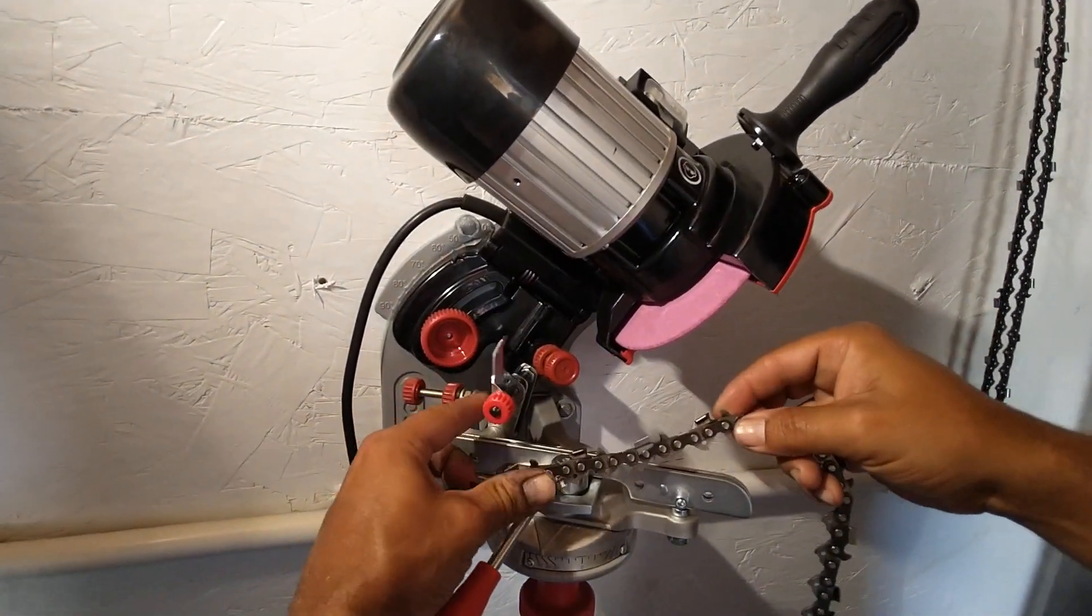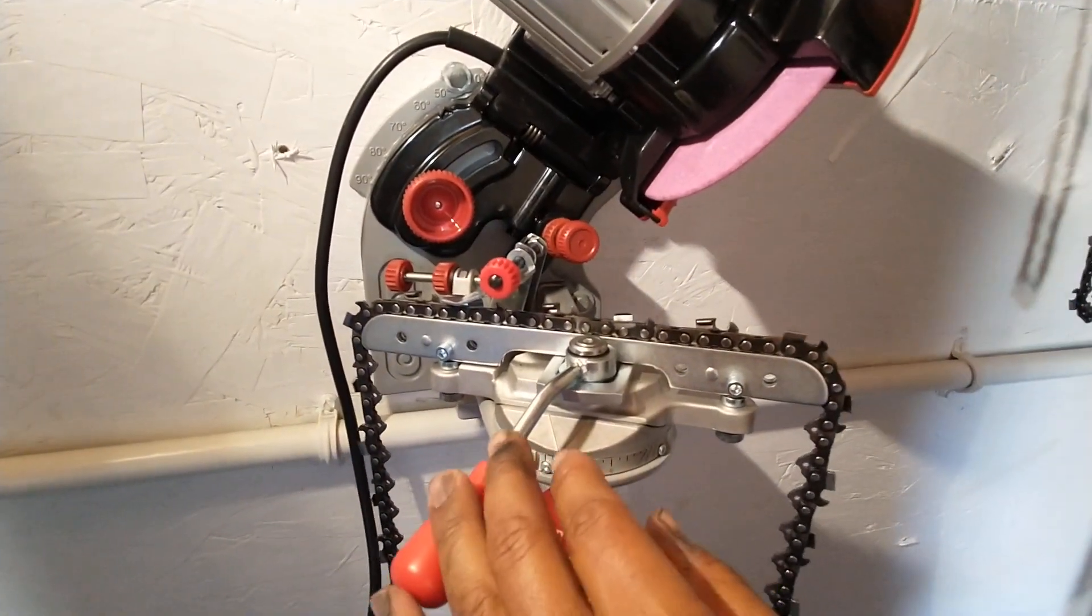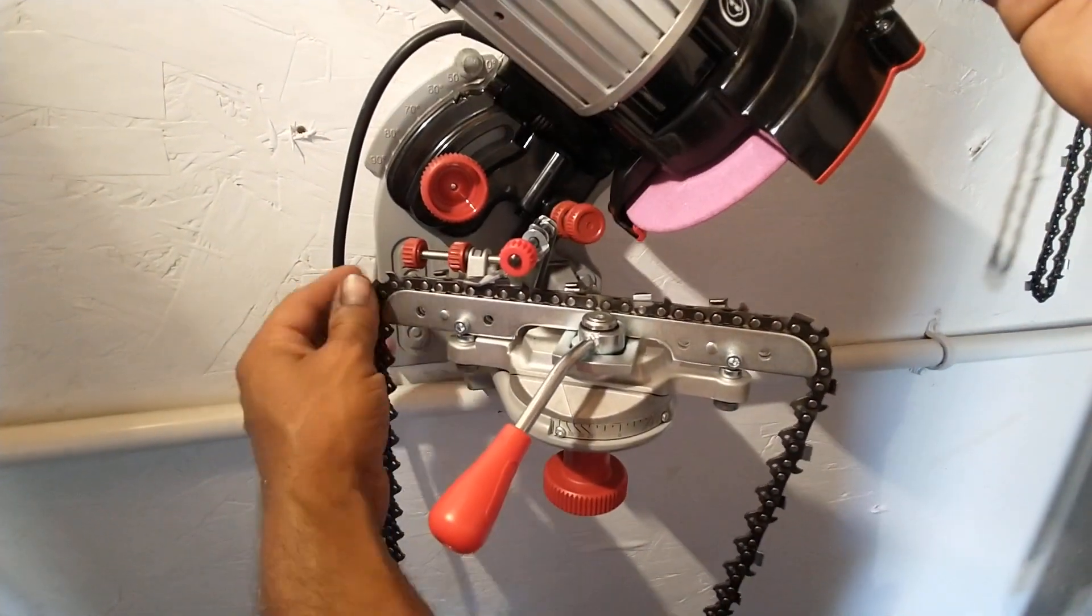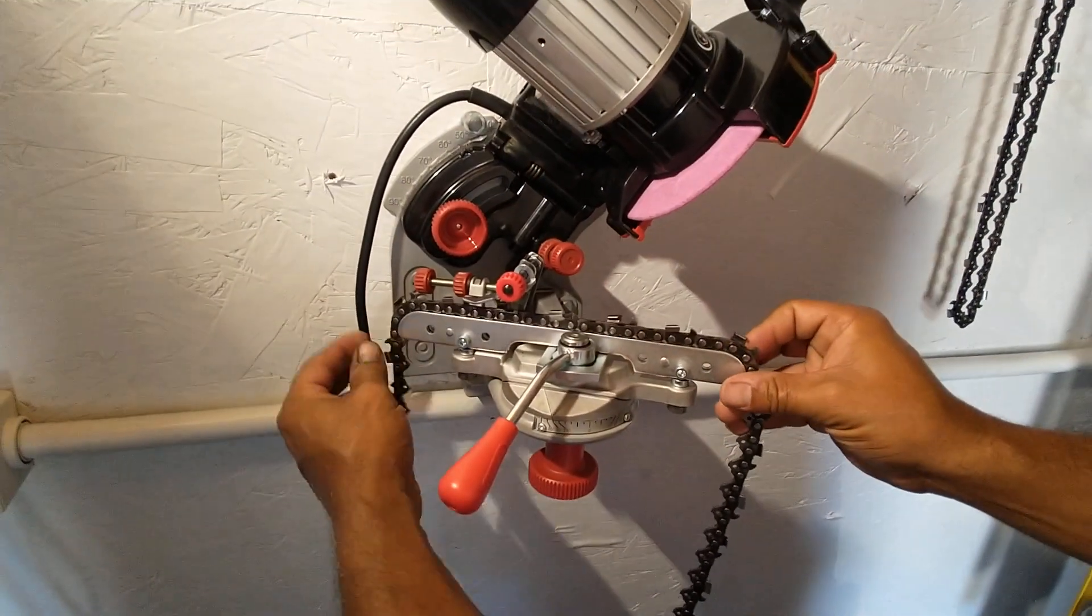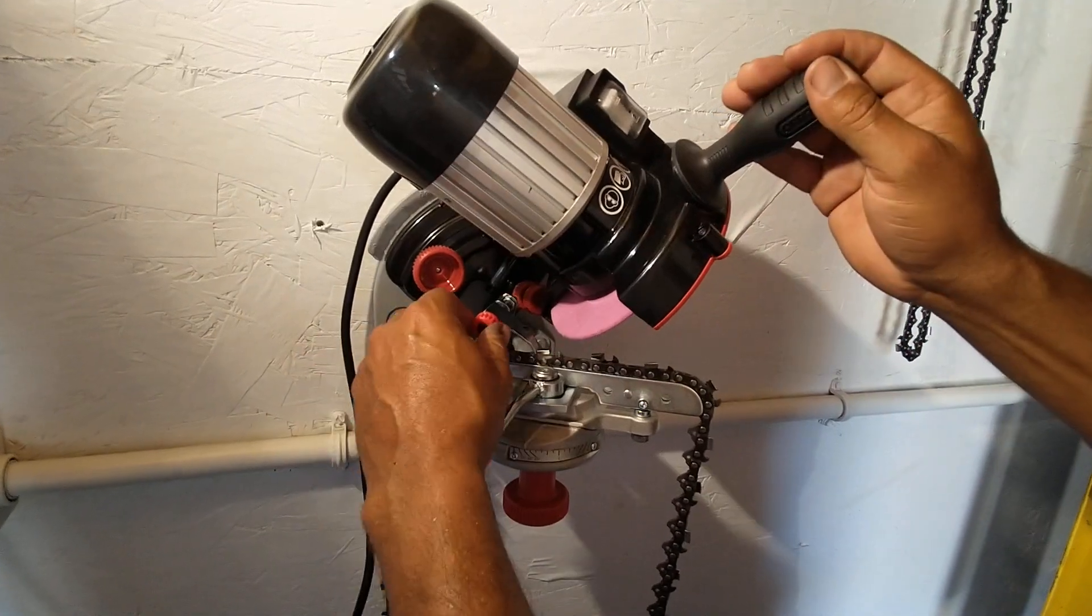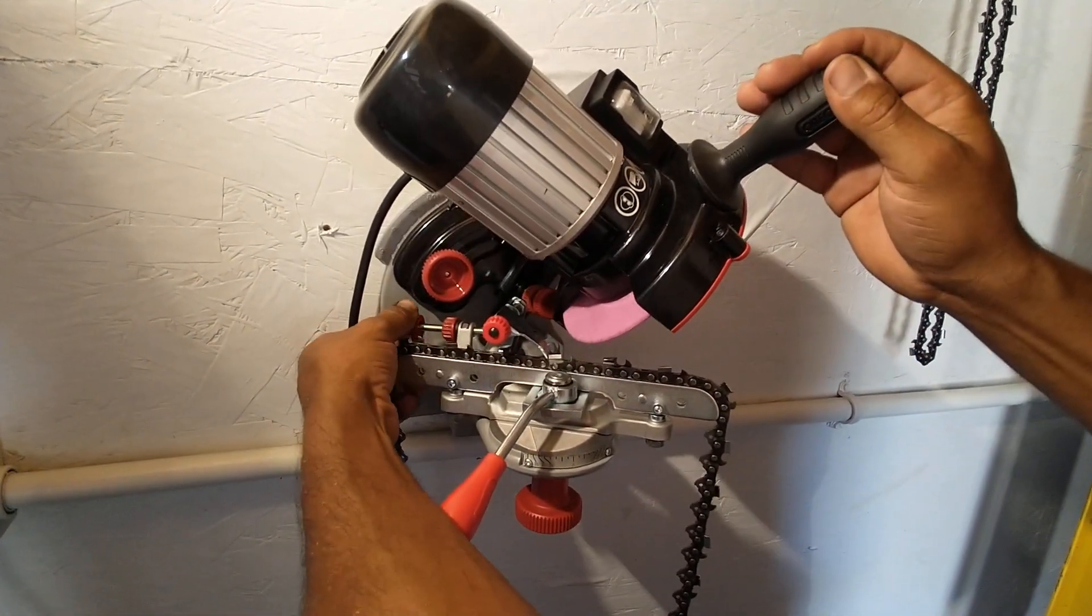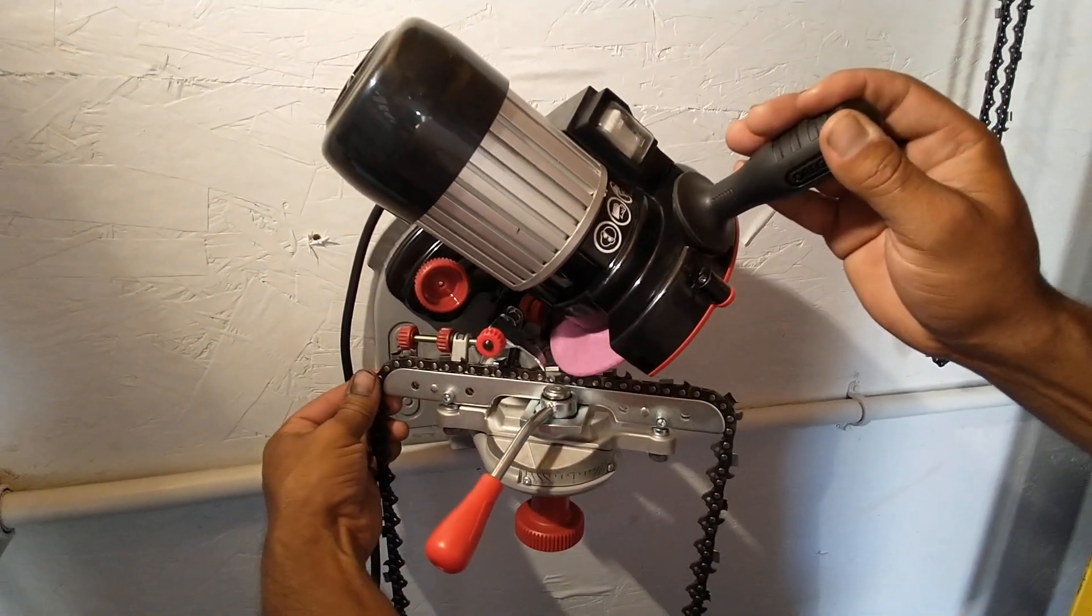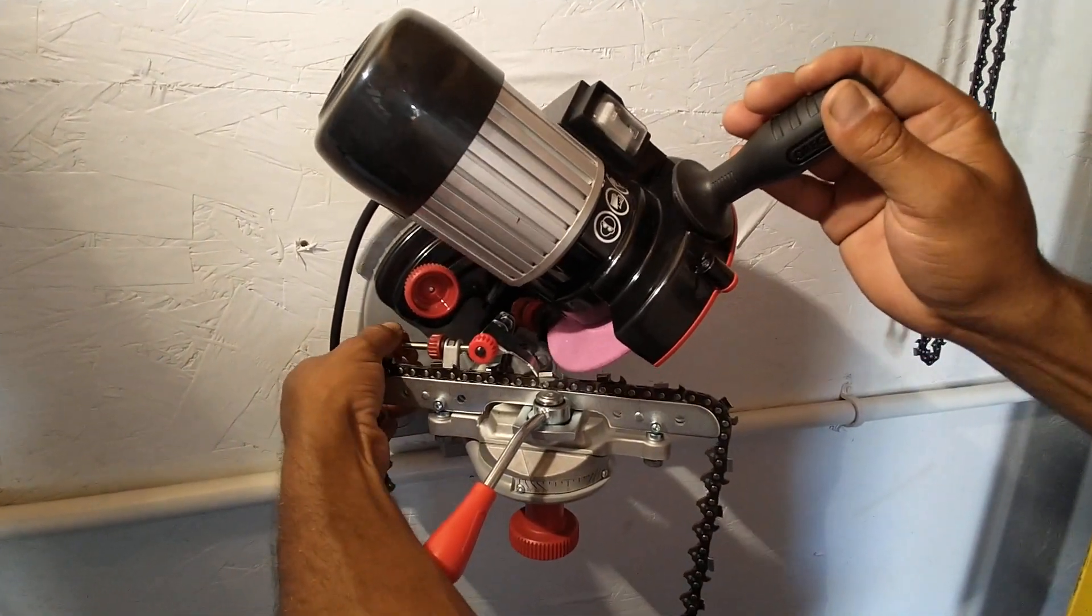We have a ranch here, about 10 acres, and we need to keep our chains sharp. It's always been a challenge sharpening with files and those sorts of things. We got this electric sharpener because it really saves a lot of time.